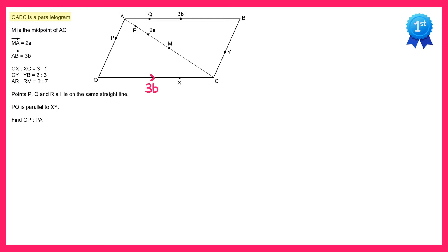We are also told that M is the midpoint of AC. Since M is the midpoint, the vector from M to A must be the same as the vector from C to M, so vector CM is also 2A.